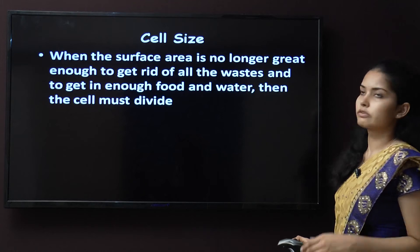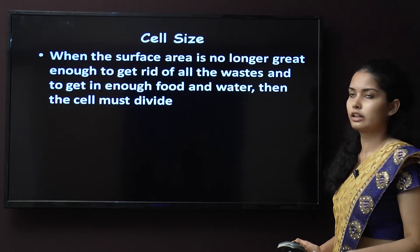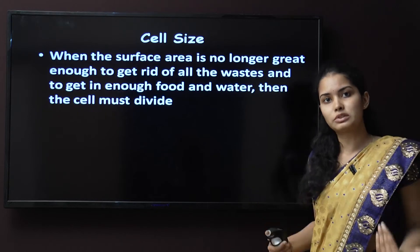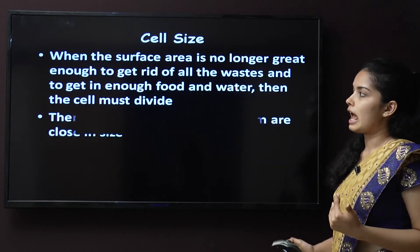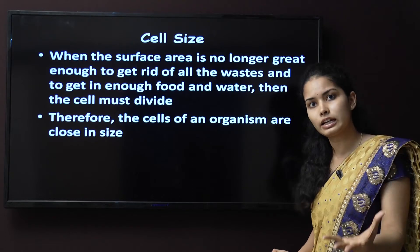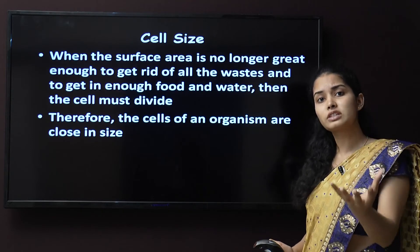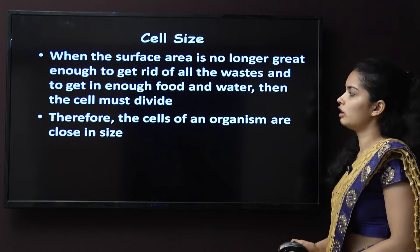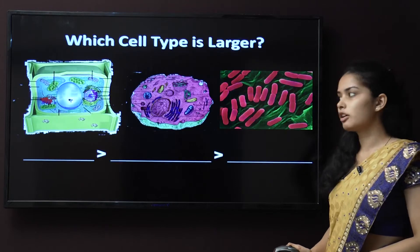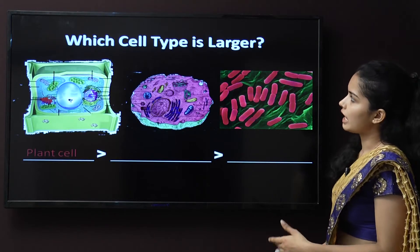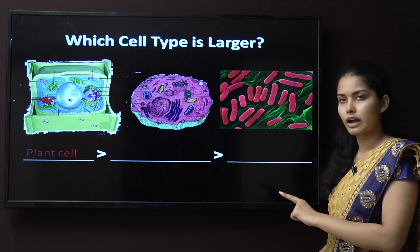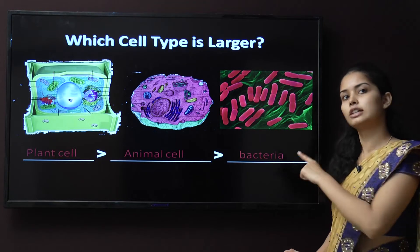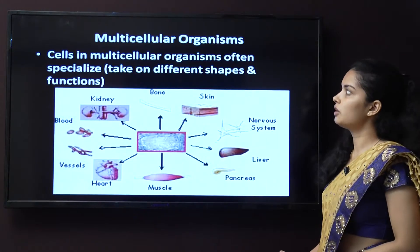When the surface area of the cell is no longer great enough to get rid of all the waste material or capture enough food, the cell has to divide so that the surface area increases. After they mature, they do not have enough surface area to release waste materials or capture enough food. The cells of an organism are close in size. The largest is the plant cell, then the animal cell, then the bacterial cell, which is the smallest because it is prokaryotic.